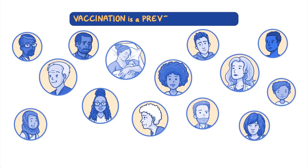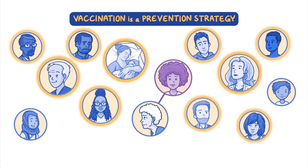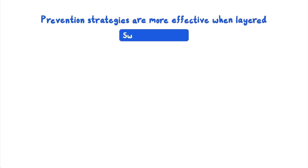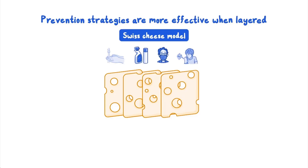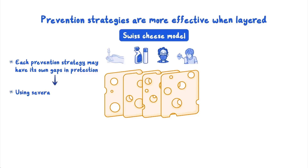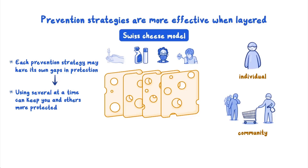In a community, vaccination is a prevention strategy that reduces the number of susceptible hosts, meaning the infectious agent is less likely to travel from person to person and the entire community is less likely to get the disease. Prevention strategies are more effective when they're layered. The Swiss cheese model is one way to think about this. Each slice of Swiss cheese has holes, but if a few slices are layered, more of the gaps are covered. Similarly, each prevention strategy may have its own gaps in protection, but using several at the same time can help keep you and others more protected. Prevention strategies can be put into place at the individual or community level through policies and regulations.